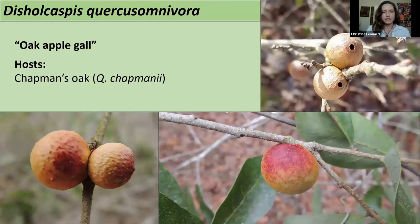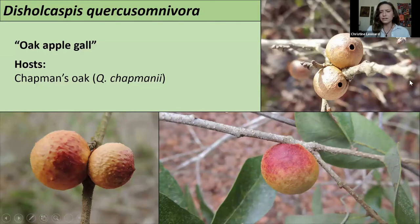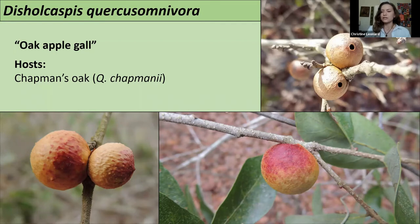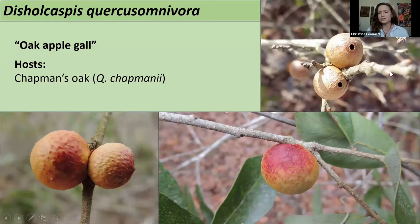Oak apple gall, Dichelcaspis quercus omnivora — one of my real favorites. They can be absolutely gorgeous when still fresh with shades of yellow and red that eventually fade to brown. You can actually see in this picture how there is an exit hole left in the gall. You'll see that oftentimes on galls out when walking — a lot of old galls will have exit holes still chewed into them. That actually leaves them open for other critters to live inside. It's usually a good idea to check whether the gall is empty or not before taking them from your tree for other uses.